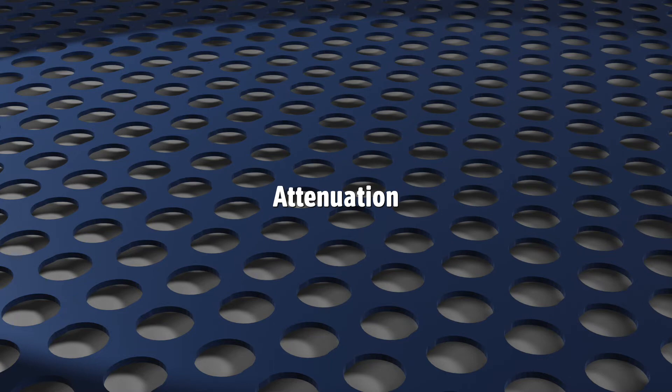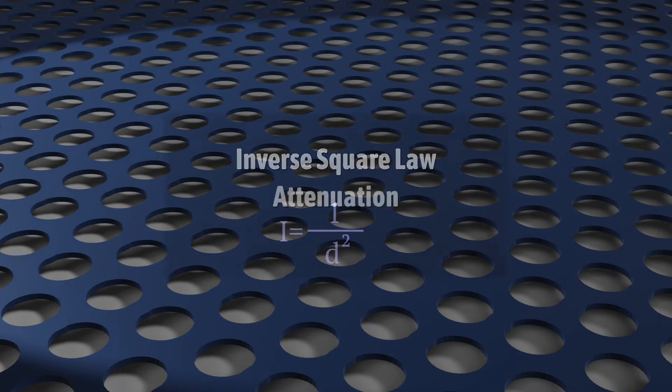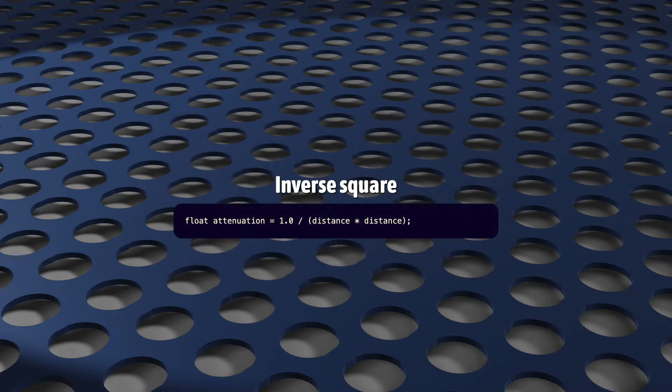There are several ways that we can calculate attenuation, but they're all a variation of this, the inverse square law. You probably learned this in high school physics for maybe magnetism or gravity, but it also works for light. And it says that for a point light source, the intensity at a distance d is 1 over d squared. This is the simplest attenuation equation, and maybe it's all you really need. And the code to do that looks like this.